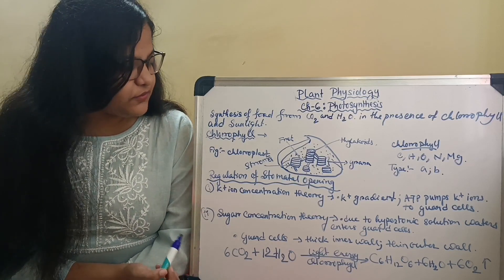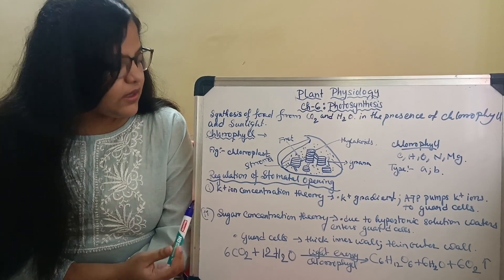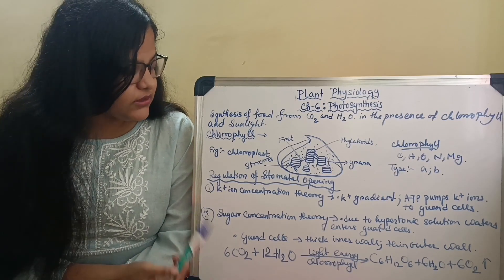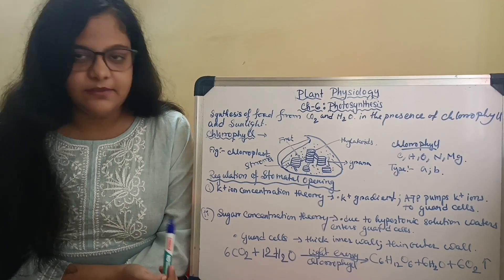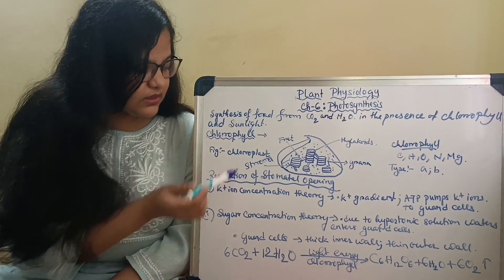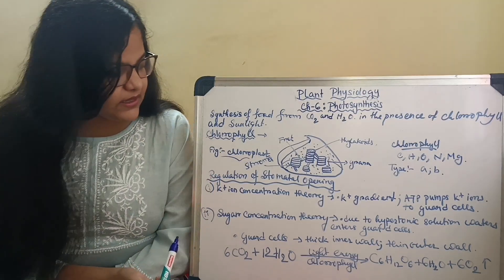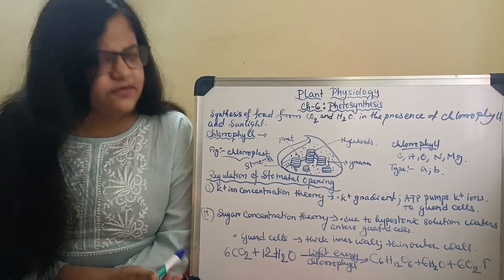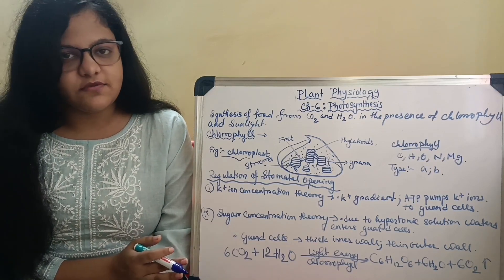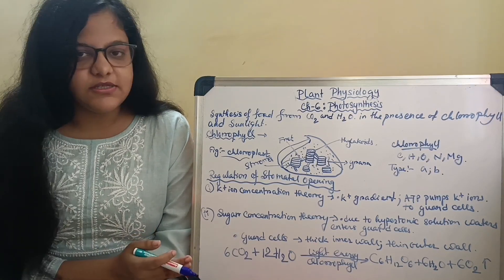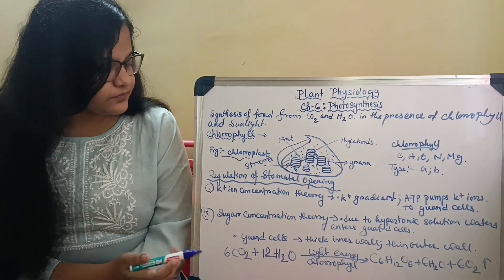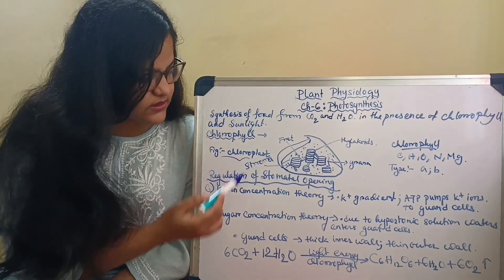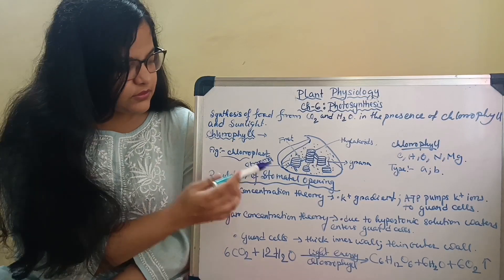Now where do we find chlorophyll? Chlorophyll is a green colored pigment which is found in the cell of the plant called chloroplast. Chloroplast is generally found in the spongy mesophyll cells of the leaves and some green parts of the stems. Now let us discuss about the structure of chloroplast.